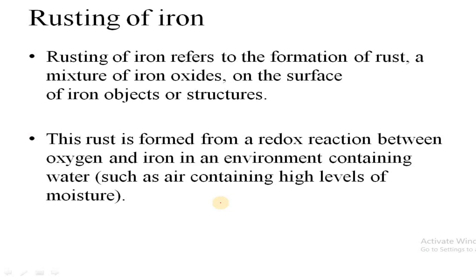Rusting of iron means the formation of metal oxide on the surface of the iron metal. Rusting is generally formed from a redox reaction between oxygen and iron in an environment containing water — that is, in an environment where moisture is available, a high-moisture environment.